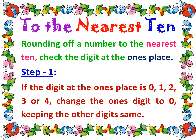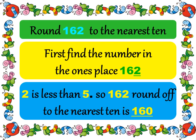First, let us recall rounding of numbers to the nearest 10. To round off a number to the nearest 10, we must first check the digit at the 1's place. Step 1: If the digit at the 1's place is 0, 1, 2, 3, or 4, change the 1's digit to 0, keeping the other digits the same. In the given example, round 162 to the nearest 10. The digit in the 1's place is 2. Since 2 is less than 5, we change the 1's digit to 0, keeping the other digits the same. Therefore, 162 rounded off to the nearest 10 is 160.